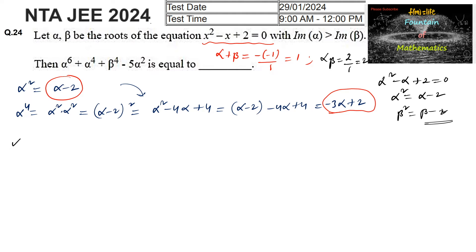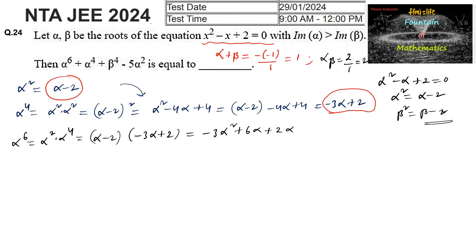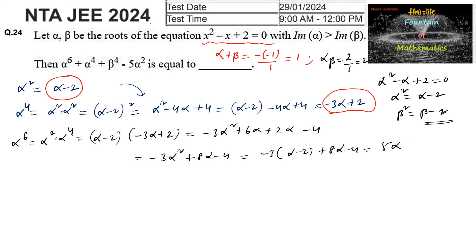Now consider alpha⁶ = alpha² × alpha⁴ = (alpha - 2)(-3alpha + 2), which equals -3alpha² + 2alpha + 6alpha - 4, giving -3alpha² + 8alpha - 4. Substituting alpha² = alpha - 2 again: -3(alpha - 2) + 8alpha - 4 = -3alpha + 6 + 8alpha - 4 = 5alpha + 2. So alpha⁶ = 5alpha + 2.